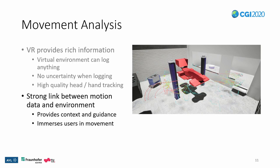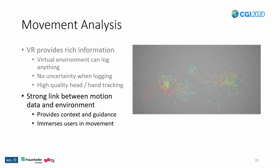Movement data has a strong link between motion and the environment. Using the same environment for performing the actions and for analyzing them gives valuable visual context and guidance to better understand the spatial embedding of the data, and has the potential to immerse users more strongly in the movement. Here, for example, we can see that the users move towards the wheel picker spot and the wheels because we can see the environment the users used. If I hide the environment, it becomes much harder to make sense of the movement.